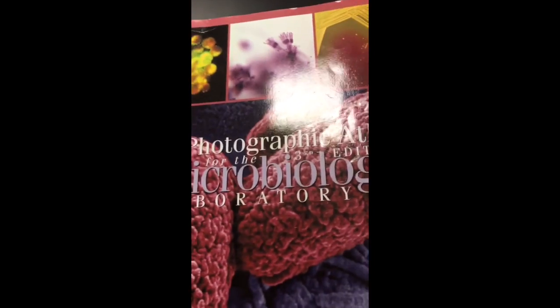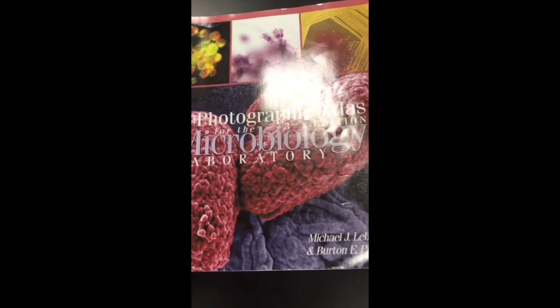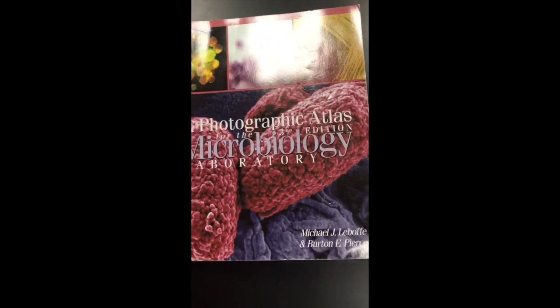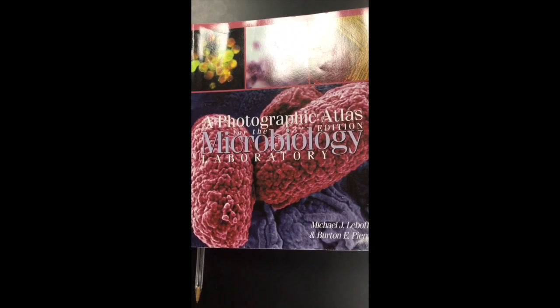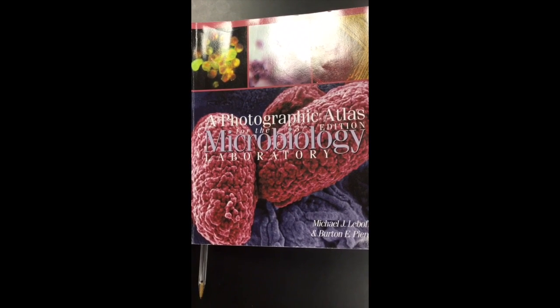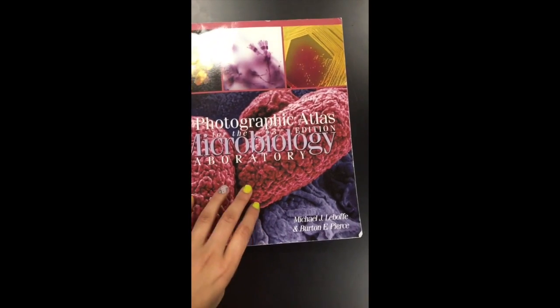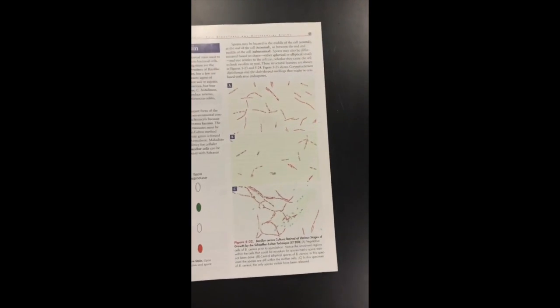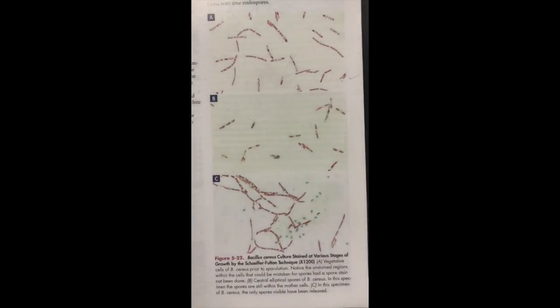And there you have your endospore stain. This is what your slide should look like once you have properly gone through the procedure of making an endospore stain. We're not going to look at it through a slide today, but we are going to use this book to help us see what it should look like under a slide. So this is a photographic atlas for the microbiology laboratory, third edition. We're going to turn to page 41 and look at figure 5-22.